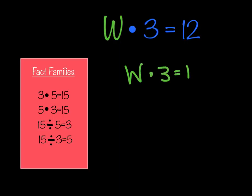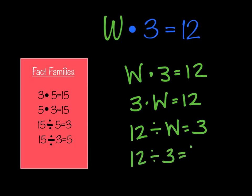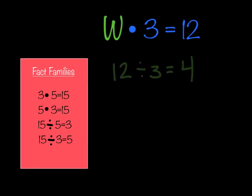Looking at the problem w times 3 equals 12, I'll use the fact family 3 times 5 equals 15 as my example. The partner for multiplication is just flip-flopping the 5 and the 3: 5 times 3 equals 15. When I move to the inverse operation — division — I have to put the answer at the beginning, just like subtraction. So I'd have 15 divided by 5 equals 3, and for my last member: 15 divided by 3 equals 5.